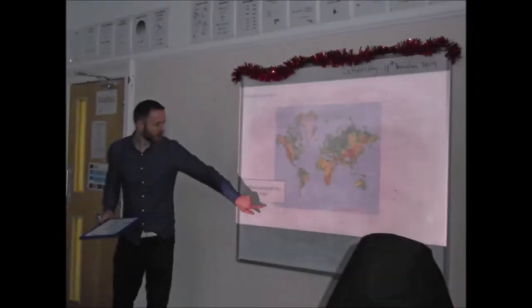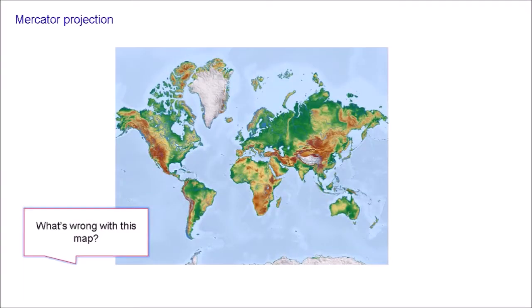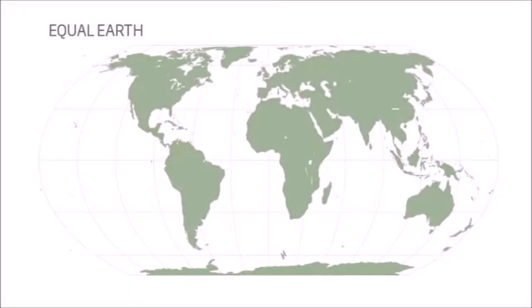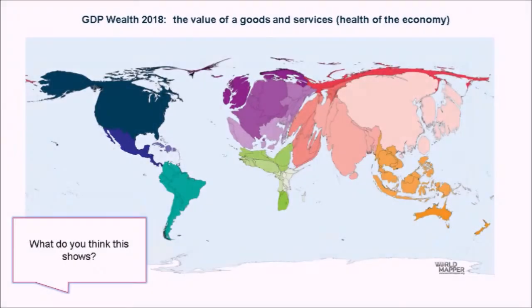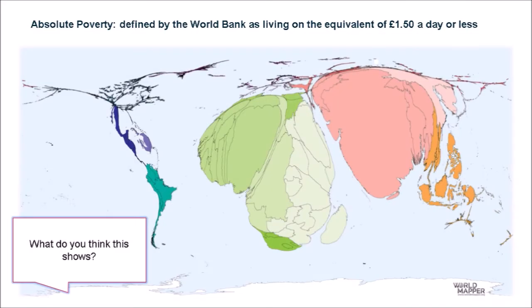We then focused our children towards the significance of Africa through exploring different maps, starting with the Mercator projection then moving on to the equal earth map projection. Next we looked at maps that blow up or shrink a country's size according to some metric which the students had to guess, such as GDP or the absolute poverty rate.